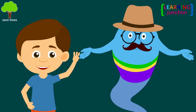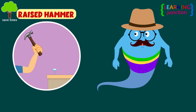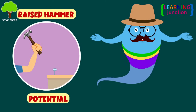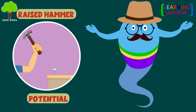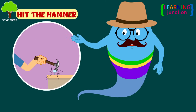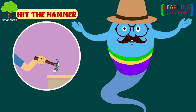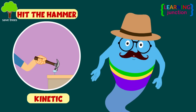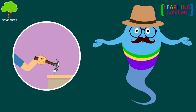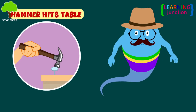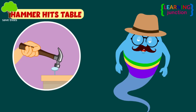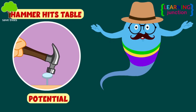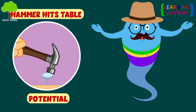There are three things. First, the raised hammer has more potential energy, since it has the potential to go higher or lower. Second, when you hit the hammer on the table, the stored potential energy is changed to kinetic energy as the hammer is falling. Third, as soon as the hammer hits the table, the energy changes its form. The stationary hammer then has stored energy in the form of potential energy.